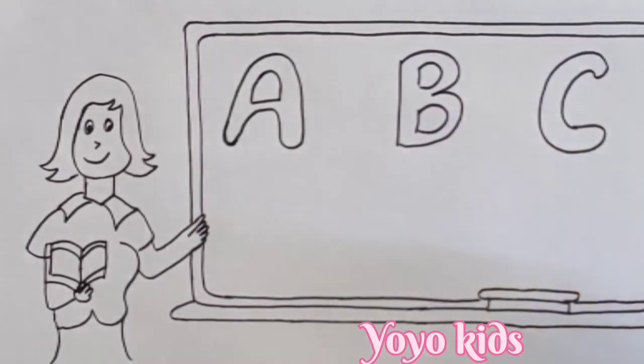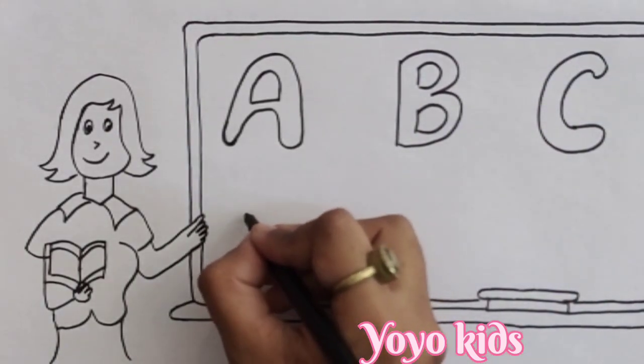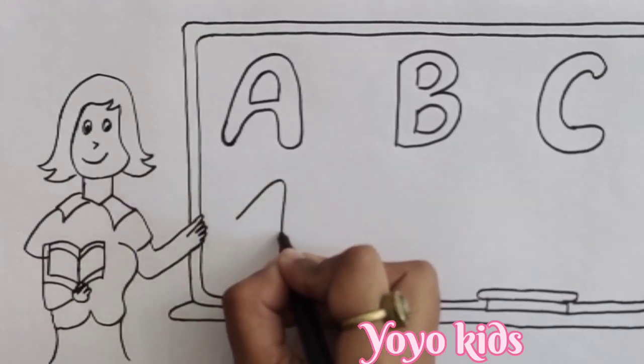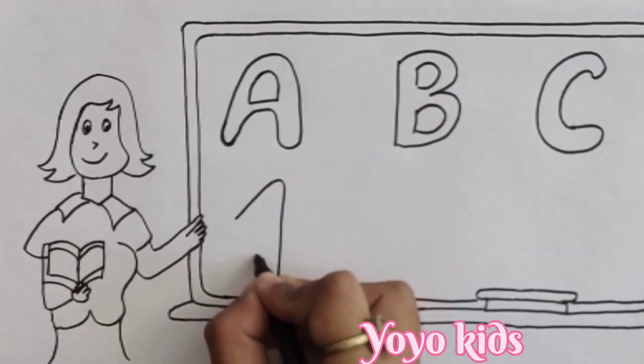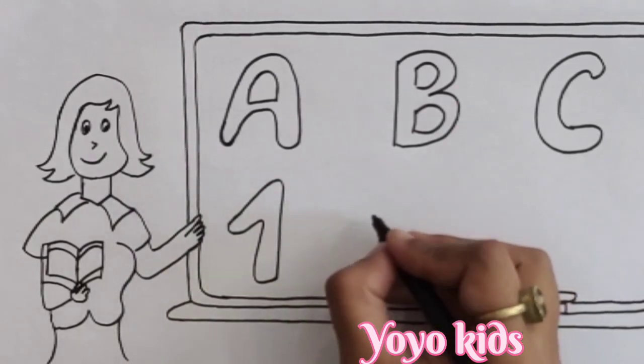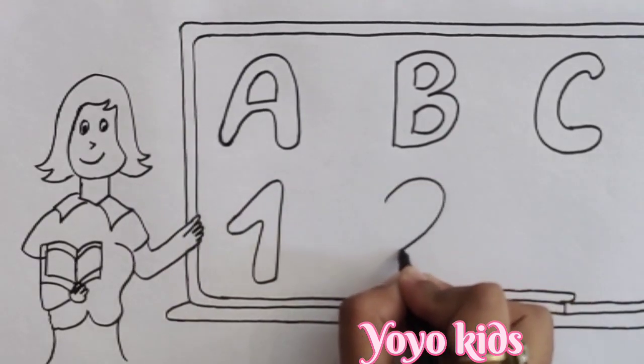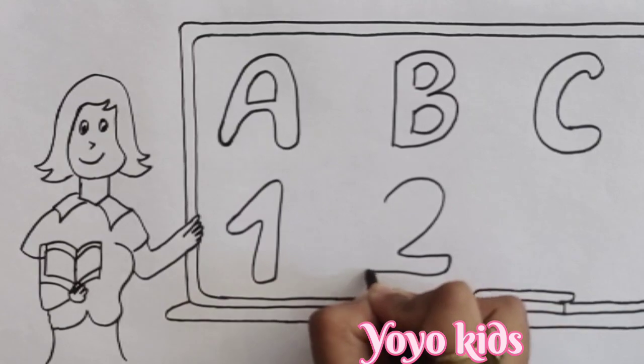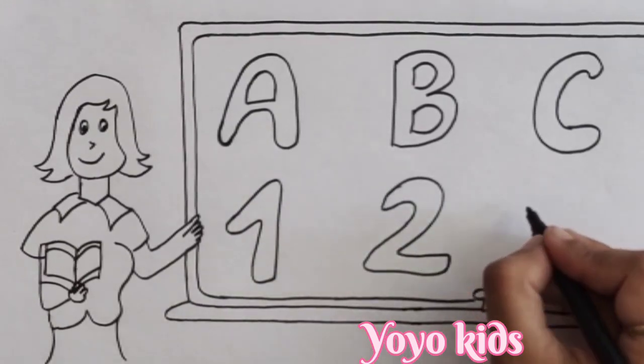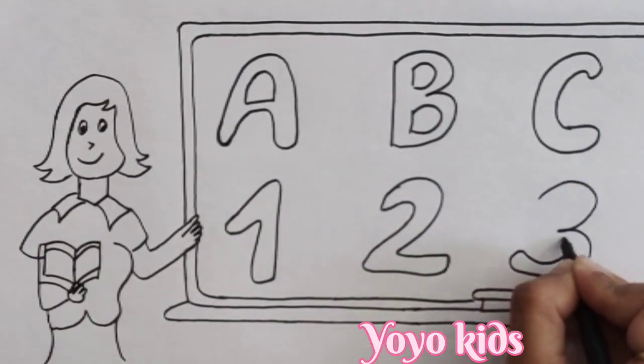C, C for Cat. Now, I know my ABCs, next time won't you sing with me. One, two, three.